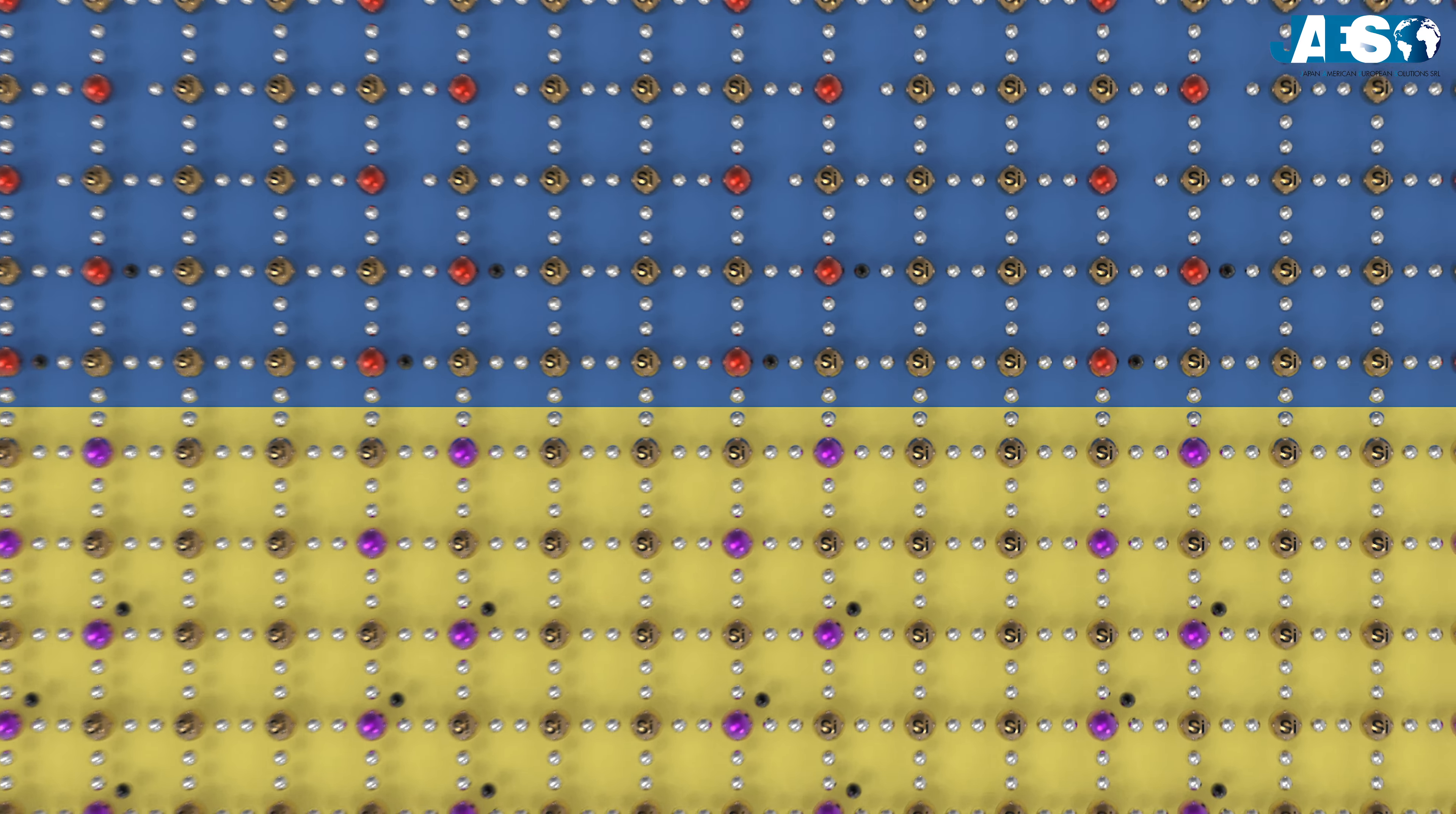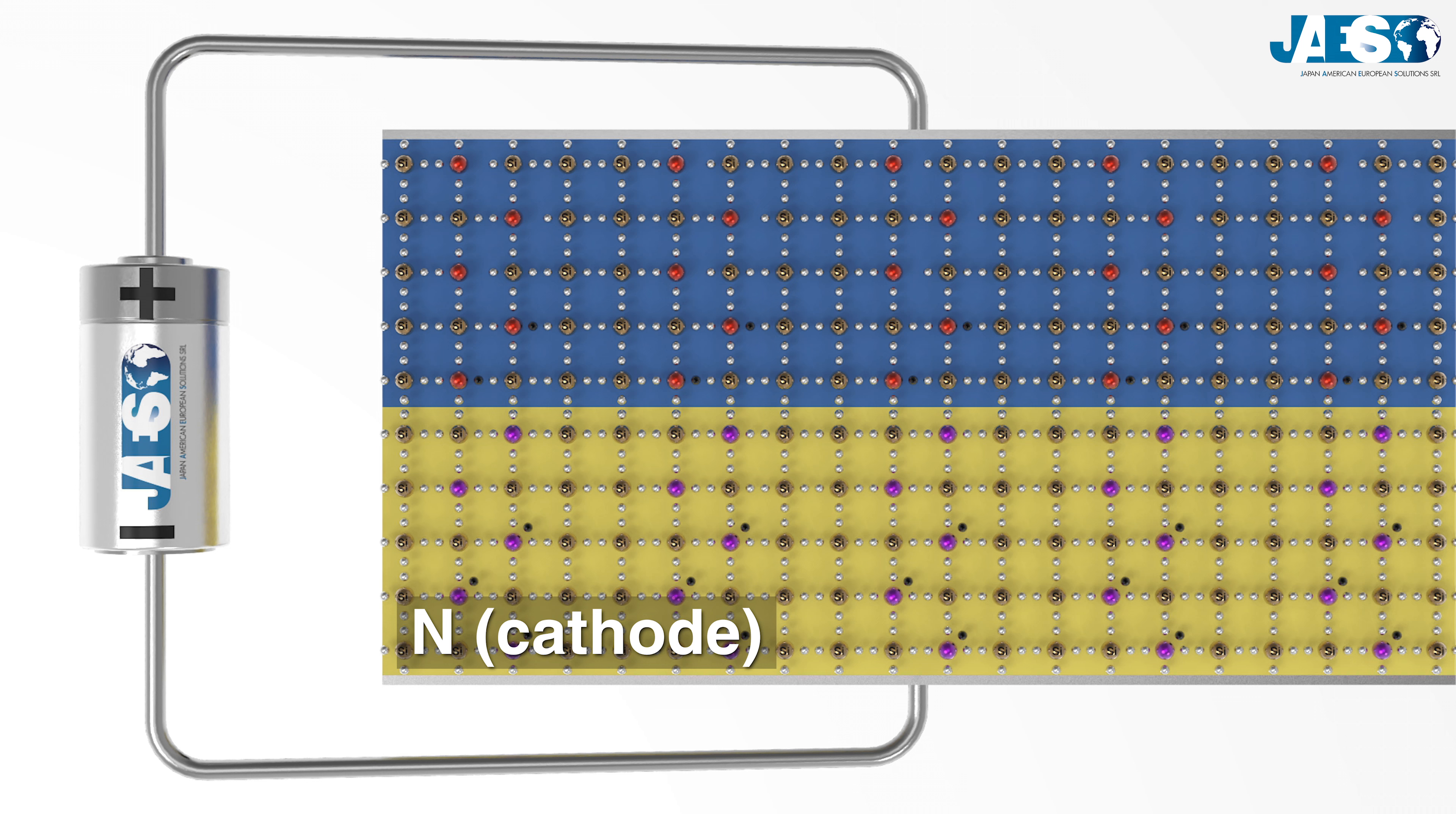If we power the two far ends with a voltage superior than the potential barrier, with the negative pole on the N layer, which is the cathode, and the positive pole on the P layer, which is the anode, we can observe the direct polarization phenomenon.